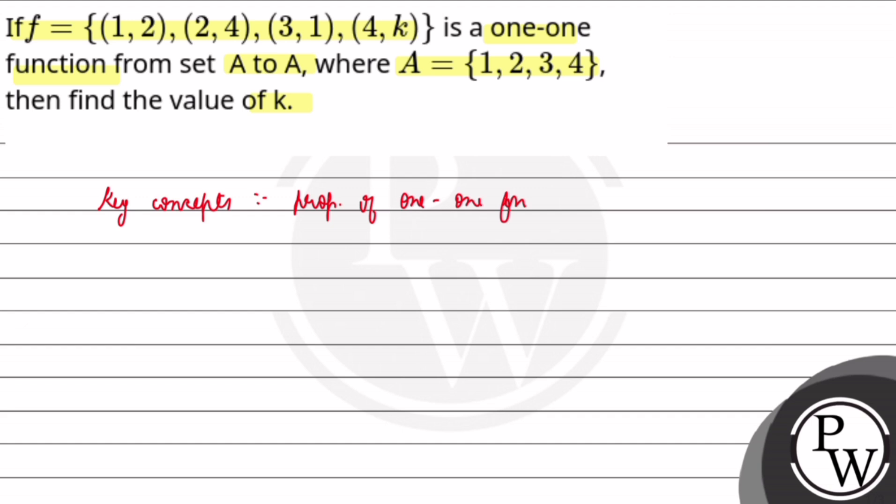We have a set A: 1, 2, 3, 4, and this is set A mapped: 1, 2, 3, 4. And when we have f, it is a one-to-one function in which 1 is connected to 2, 2 is connected to 4.